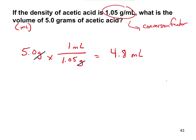The calculator gives 4.7619..., but we need the correct number of significant figures. The number 5.0 has 2 significant figures, and 1.05 has 3 significant figures. For multiplication and division, the answer uses the fewest significant figures — which is 2. So the final answer is 4.8 milliliters.